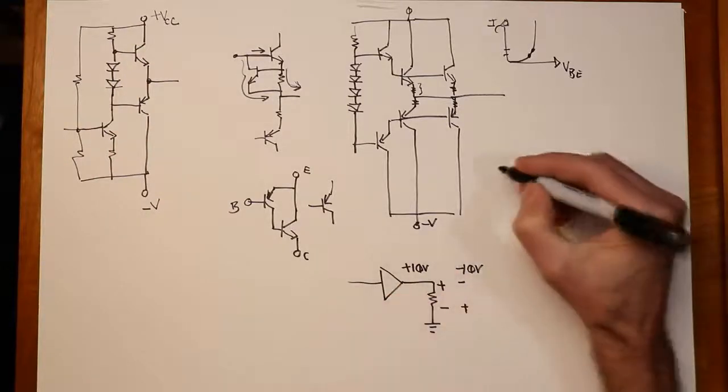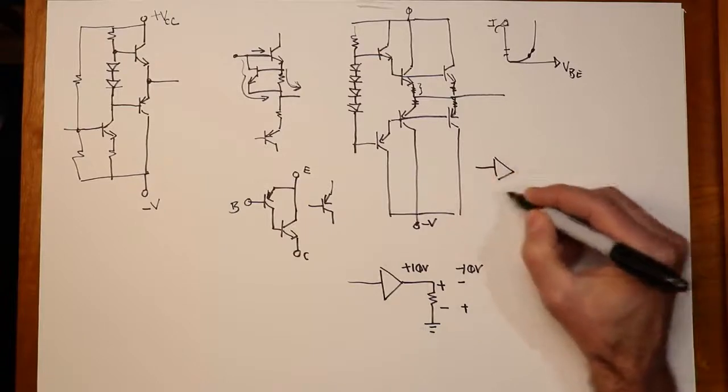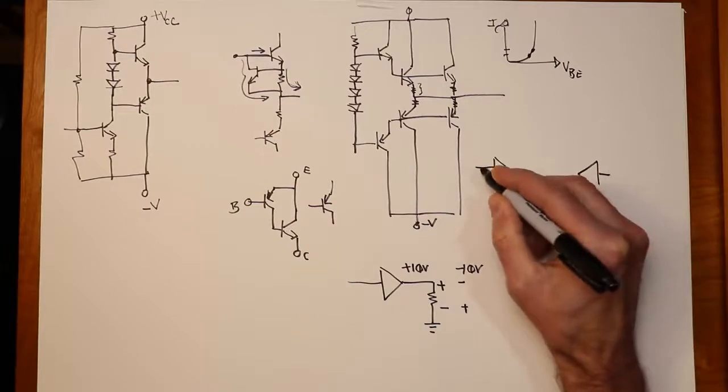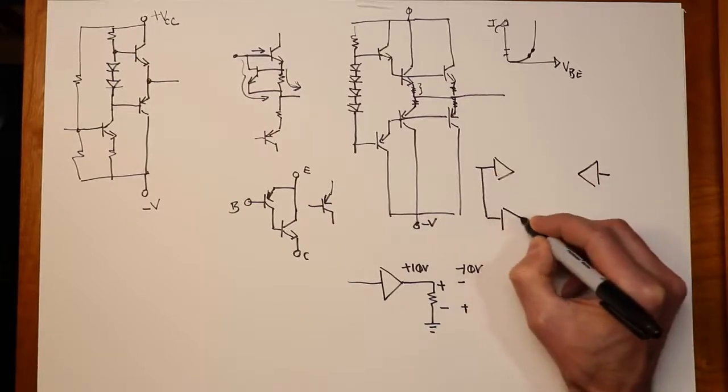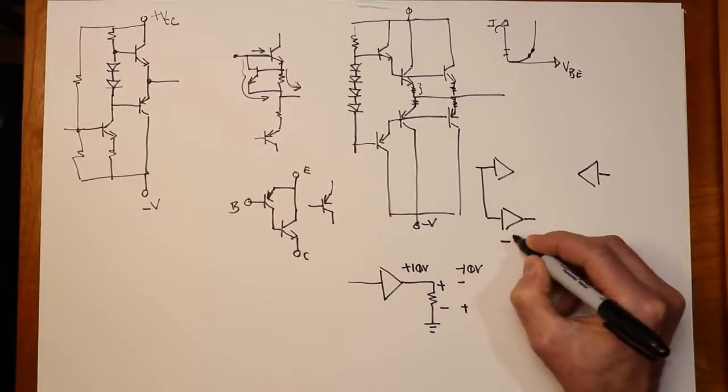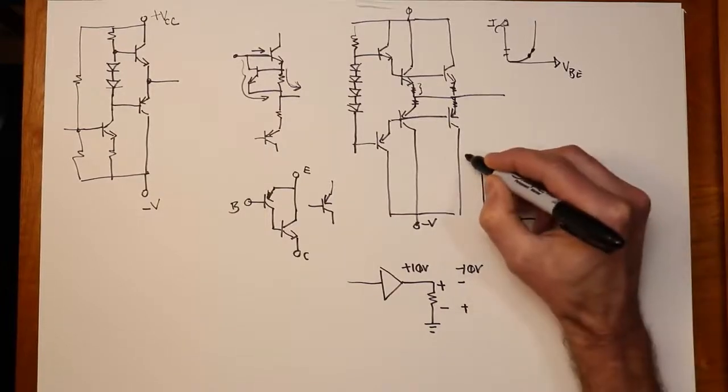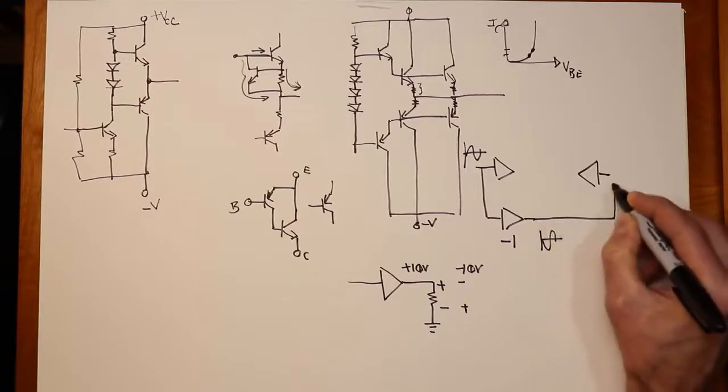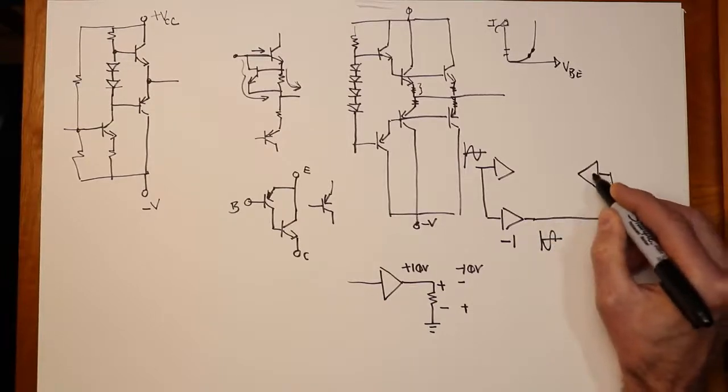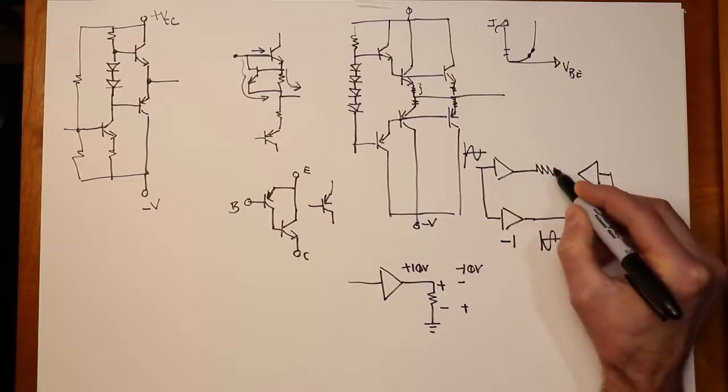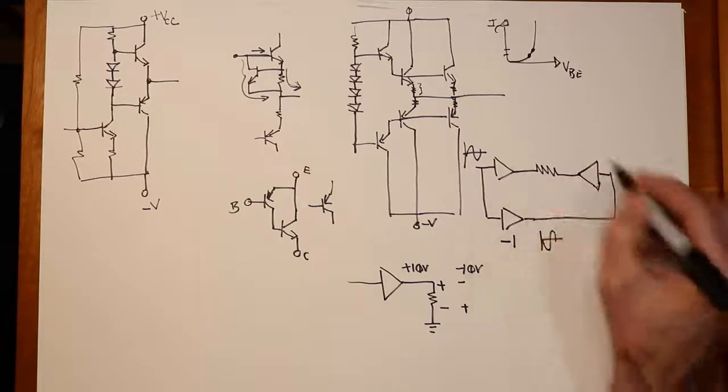Now, suppose I take two amplifiers. And what I'm going to do is take this signal back here, the original input signal, and I'm going to run this through a buffer, a gain of one, but inverting. So if I have a sine wave here, coming out over here, I'm going to have a minus sine wave. And I'm going to feed that into an identical amplifier. So these are my two power amplifiers. And then my load will be connected between these two. This is called a bridged output.